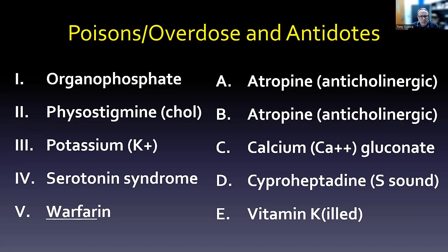The last five: organophosphates, which we think of as cholinergic, have atropine — the anticholinergic drug — as their antidote. Physostigmine, which is an acetylcholinesterase inhibitor that keeps acetylcholine from being broken down, is in effect cholinergic, while atropine is anticholinergic and works against it. For potassium, think of K+ on the periodic table — right next to potassium is buddy calcium, Ca2+. They both have that hard K sound; kalium represents potassium, and calcium gluconate is used as the antidote. Serotonin syndrome — use the S sound to connect it to cyproheptadine.